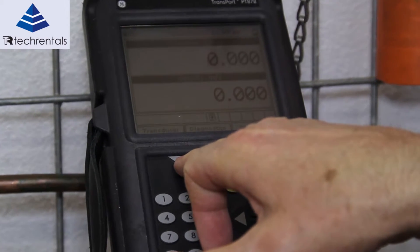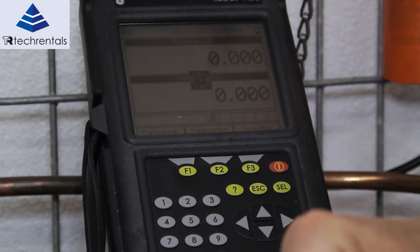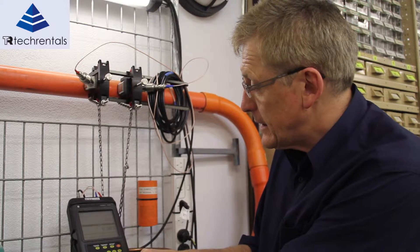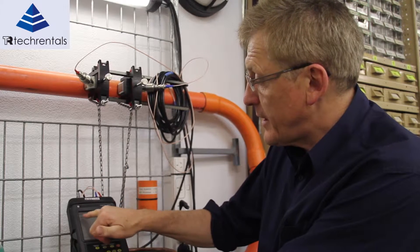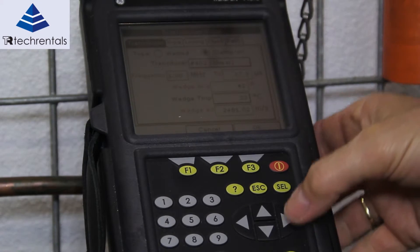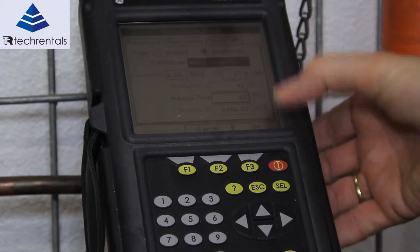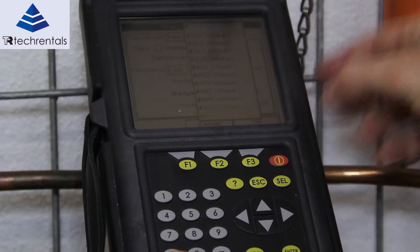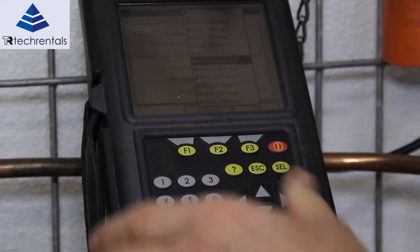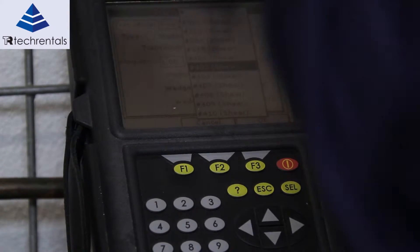Now, in order to configure the meter we push the transducer button here. Now it brings up a menu. First thing we've got to do is select which particular type of transducer we're using. In this case we're using a type 402 transducer.